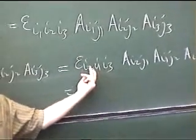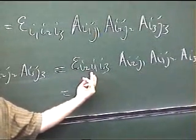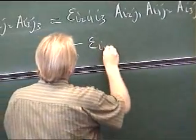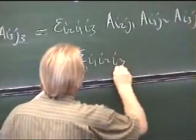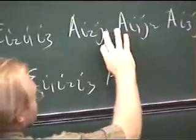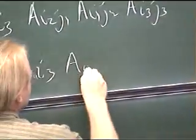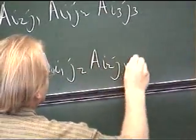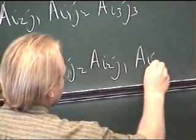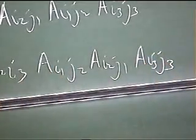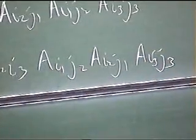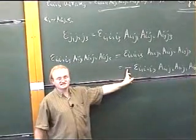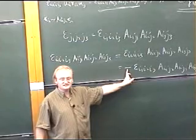And now what I can do is swap these two indices. That will cost me a minus sign. And I can swap these two factors around—they're just numbers. So you can see, if I swap j1 and j2, which is what I've done here, I pick up a minus sign.